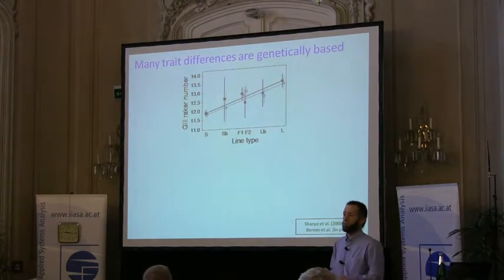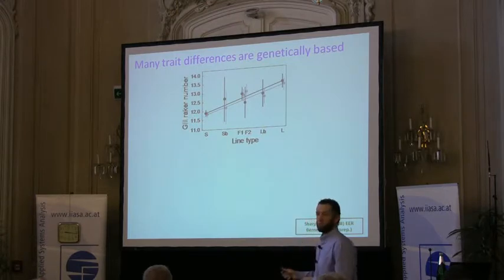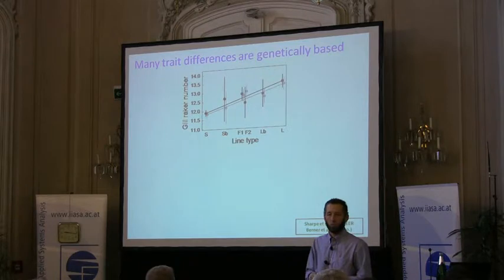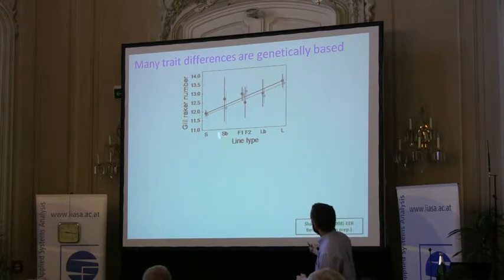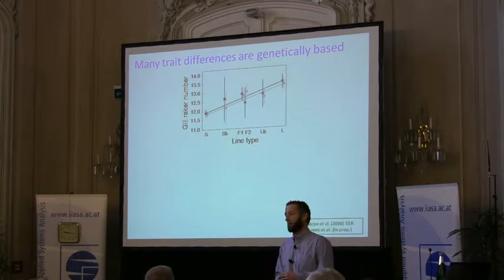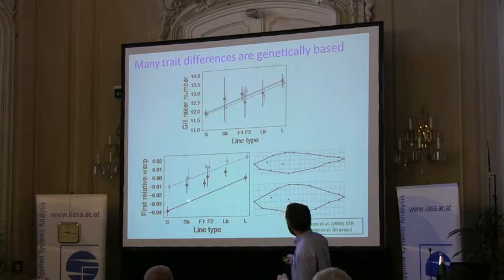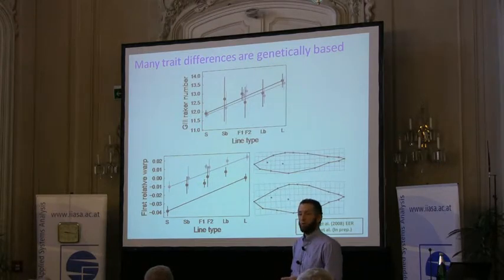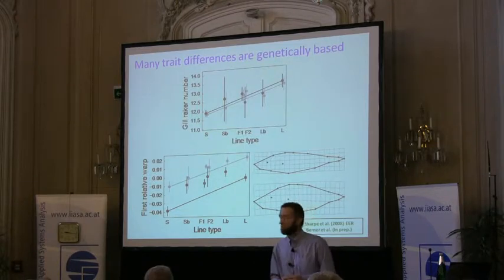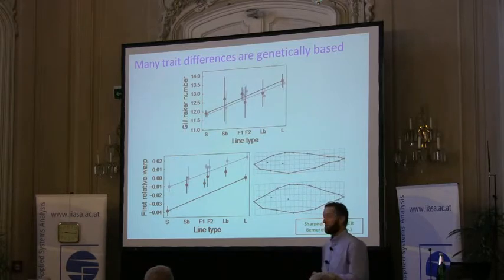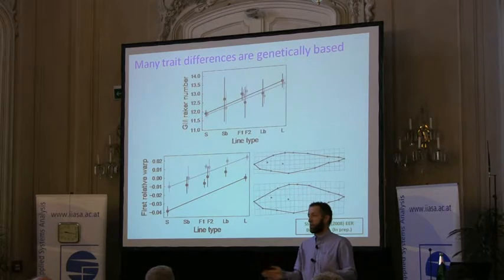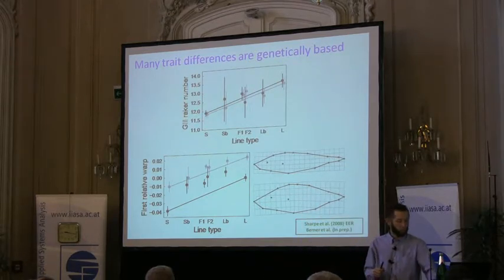We started with traditional common garden experiments, finding many differences have a genetic basis. Here I'll show the most recent unpublished results from line crosses - hybrids and back-crosses to parental forms - to get hints about additive, dominance, or epistatic contributions to these two traits. For gill raker number it's very strongly genetically based with an almost entirely additive genetic basis. For body shape, from geometric morphometrics, you still have a very strong genetic basis, but in females there's a strong dominance component - lake alleles seem somewhat dominant over stream alleles - while in males you have almost perfect additivity again.